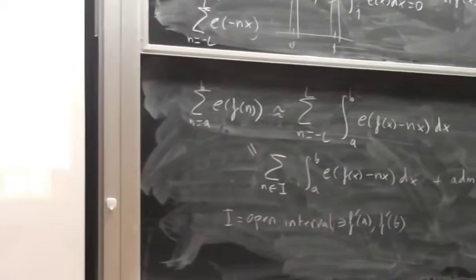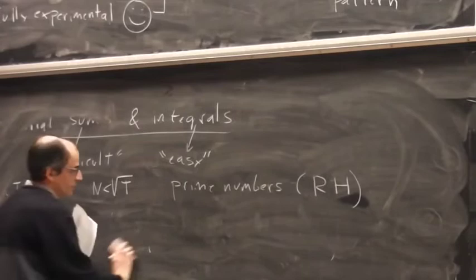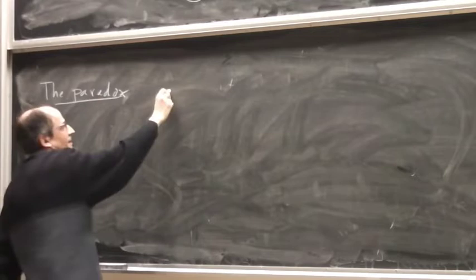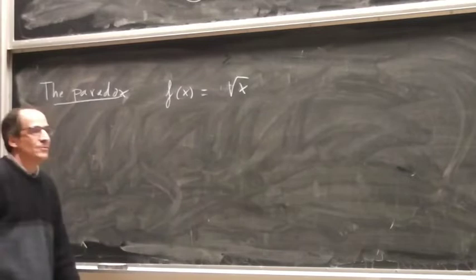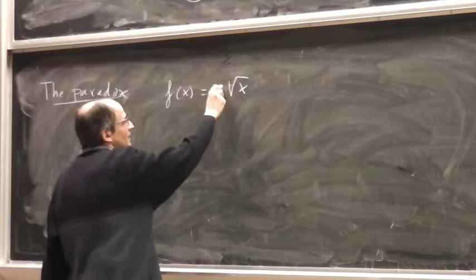Now let's try to understand the paradox of the experiment. In my notes, I took this problem as an example because it was easy for me to compute the integral. But we are going to put here alpha, because it is more general.